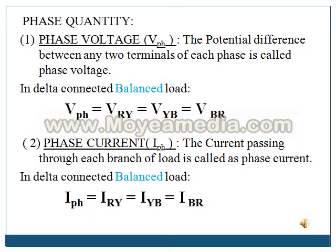Similarly, we also have phase currents. The current flowing through each branch of the load is called as phase current. In the first branch, current flows from R to Y, named IRY. Second, Y to B, named IYB. Third, B to R, named IBR. Again, the equal to sign applies because this is balanced load.